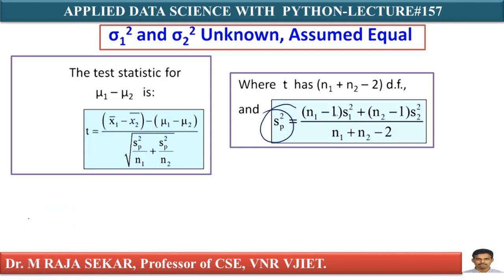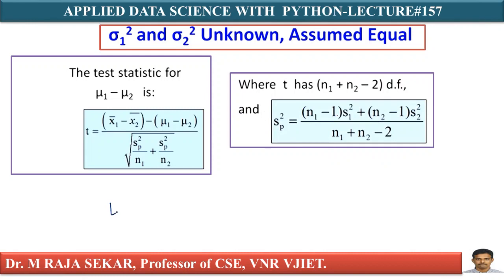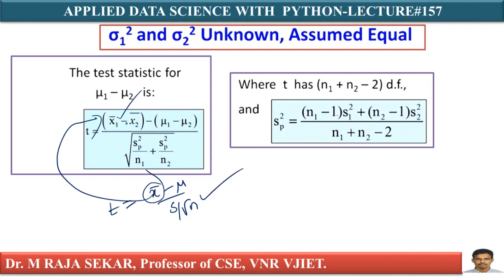This SP square is the pooled variance, where N1 minus 1 is the weight (degrees of freedom) of the first sample, and N2 minus 1 is the weight of the second sample. The test statistic T equals X1 bar minus X2 bar, minus (mu1 minus mu2), divided by SP times the square root of (1/N1 + 1/N2). This is analogous to the single-sample T test formula.